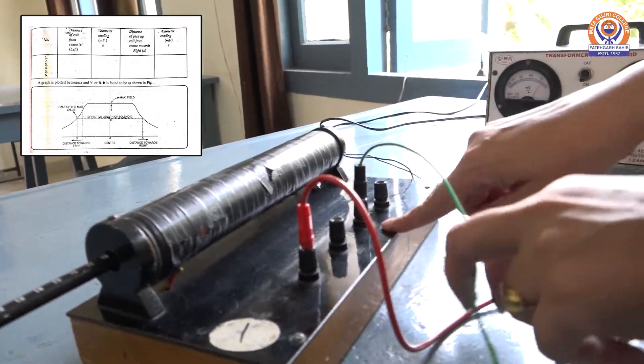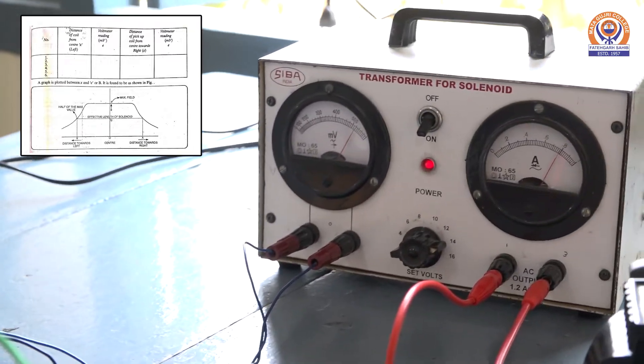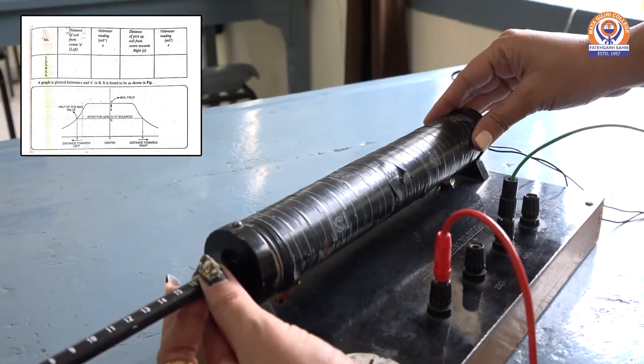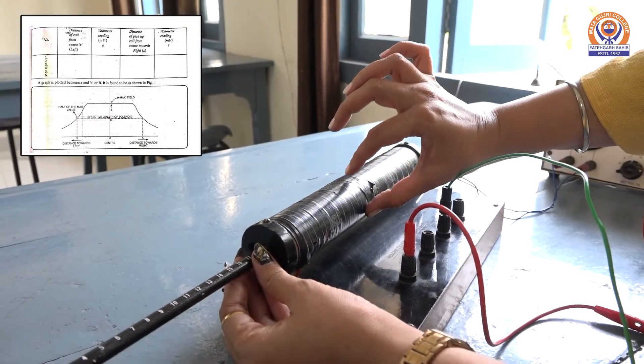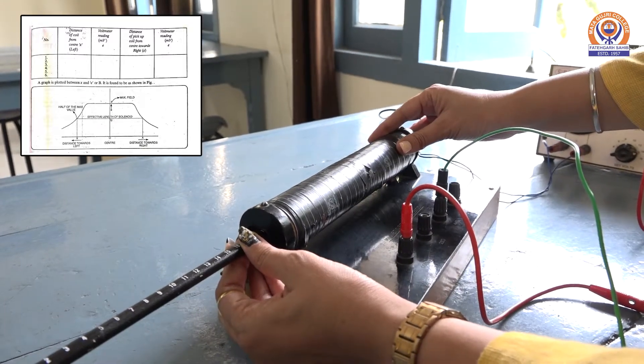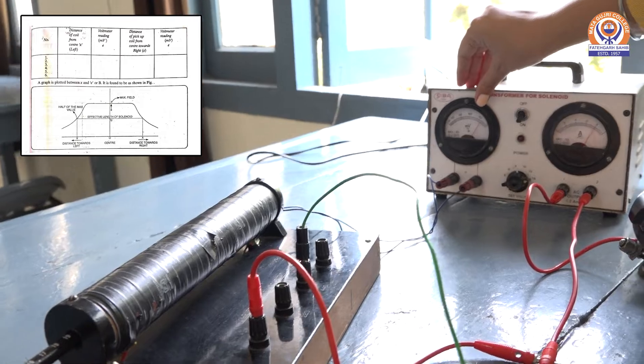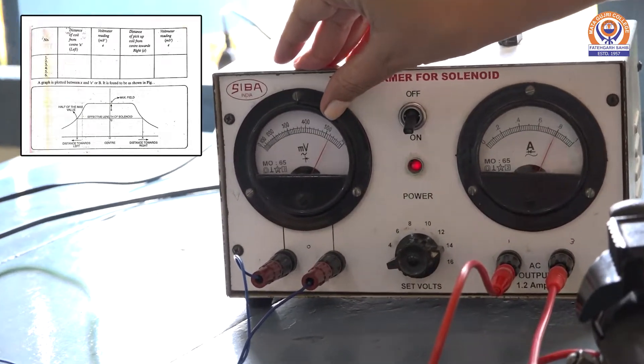I have fixed number of turns to 440. Current is fixed to 0.8 ampere. And now I am moving this coil towards left. This will act as an X axis and search coil is placed perpendicular inside it. At this moment, at 0 distance, the reading of millivolt meter is around 520 millivolt.